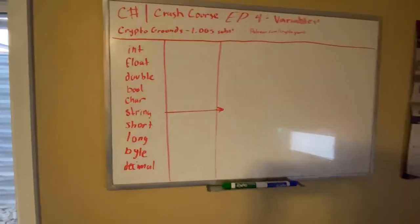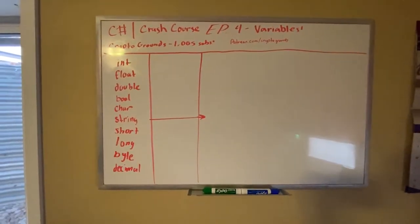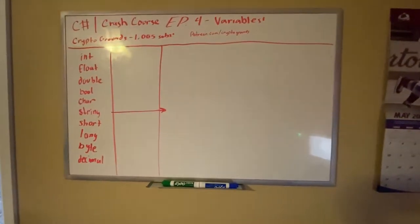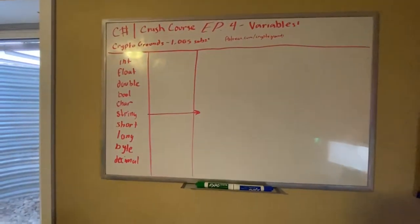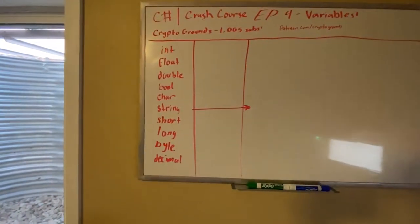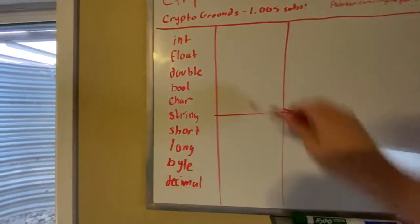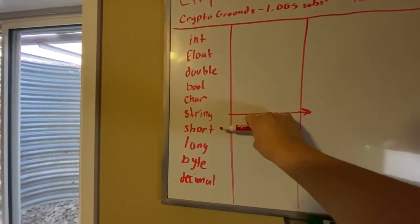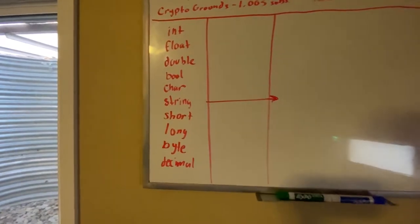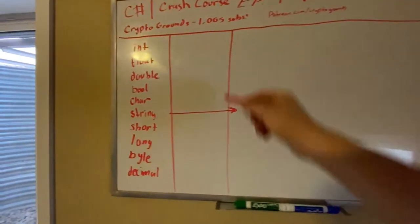Before I forget to mention, if you haven't seen my 1000 subscriber special videos, make sure you check it out, it'll pop up right here. All right, so we have our variables right here set up already: int, float, double, bool, char, string, short, long, byte, and decimal. I'm going to explain every single one of these.